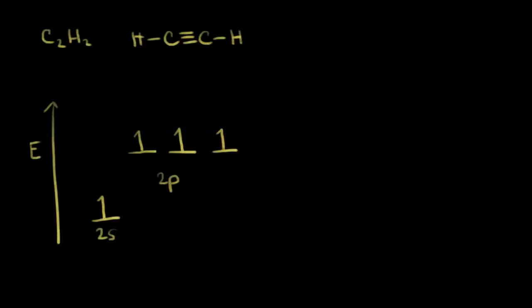In the video on sp3 hybridization we saw carbon was bonded to four atoms. In the video on sp2 hybridization we saw that carbon was bonded to three atoms. In this video we're going to look at the type of hybridization that's present when carbon is bonded to two atoms. If I look at this carbon in the ethyne or acetylene molecule, this carbon is bonded to a hydrogen and also to another carbon — carbon bonded to only two atoms. The shape of the acetylene molecule has been determined to be linear, with a bond angle of 180 degrees.